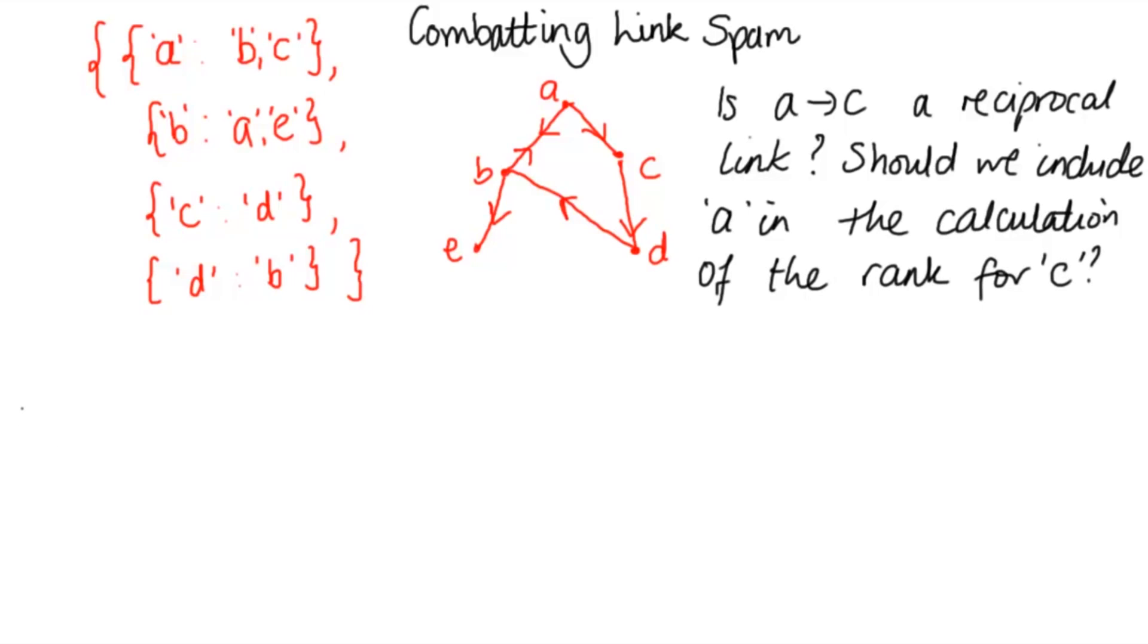So I'm going to look at the values of K, K equals zero. I'm going to ask is AC reciprocal? And then from that I'll be able to tell whether to include A or not in the calculation of C's rank.